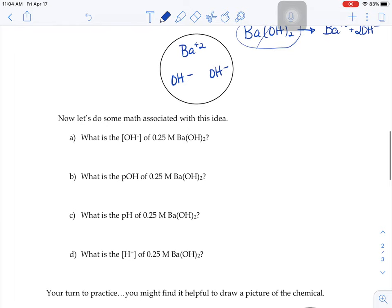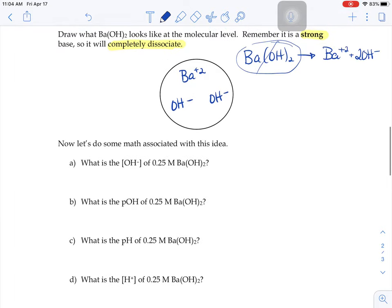So let's do some math associated with this idea. We're going to do 0.25 molar barium hydroxide. I'm going to expand that capital M to be moles of barium hydroxide per liter.